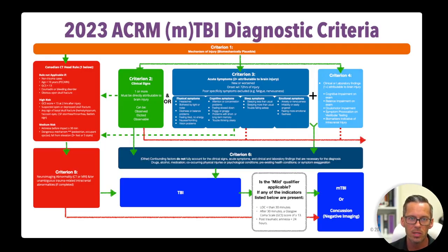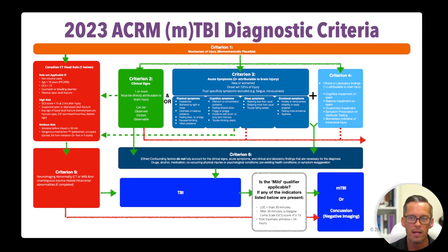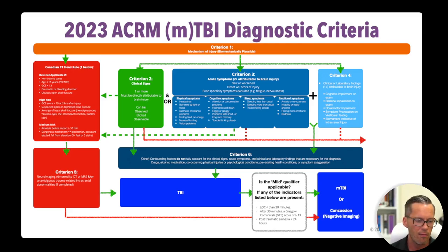Here's the flowchart associated with this 2023 ACRM mild traumatic brain injury diagnostic criteria. The M is in parentheses because realistically, this is a traumatic brain injury diagnostic criteria — we're going to figure out if it's mild or not, or a concussion. Starting at the top and working our way down, criterion one is the biomechanically plausible mechanism of injury. If you don't meet the threshold for criterion one, you don't go any farther — you cannot diagnose a traumatic brain injury or concussion. That's why talking about chemical concussions doesn't make any sense, because concussion basically comes from the Greek word 'to shake.'